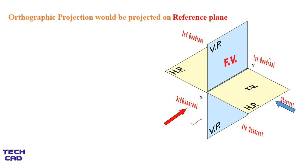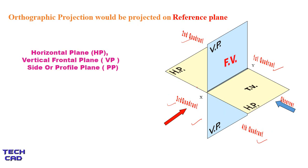Please go to that video to understand what is the reference plane, what is the first quadrant, second quadrant, third quadrant, and fourth quadrant, and what are HP and VP. VP is the vertical plane and HP is the horizontal plane. We also have another plane that is the profile plane for the side view. The profile plane is not part of the reference plane — it is a separate plane PP used to make the side view. Please go to that video for full details.